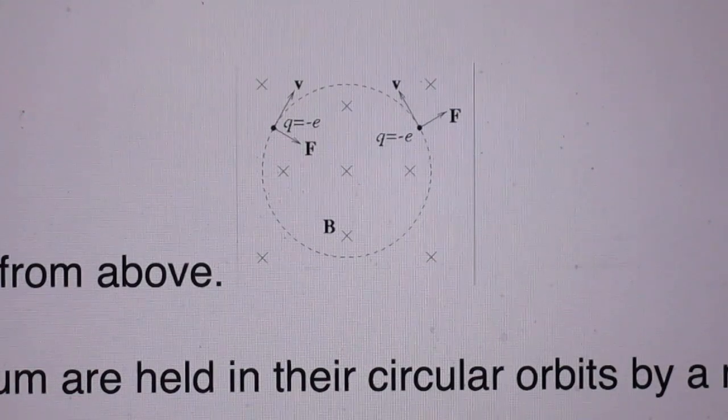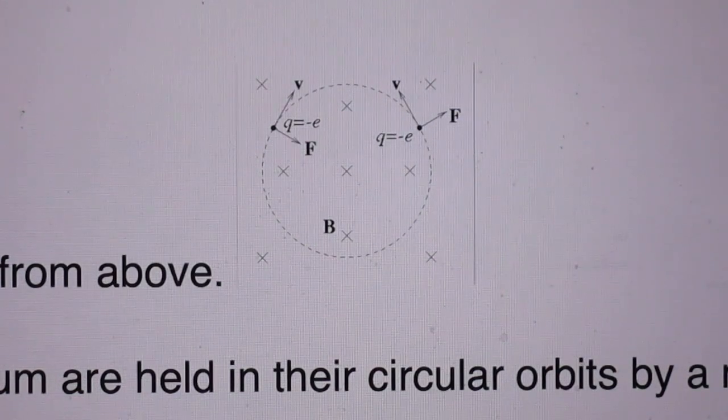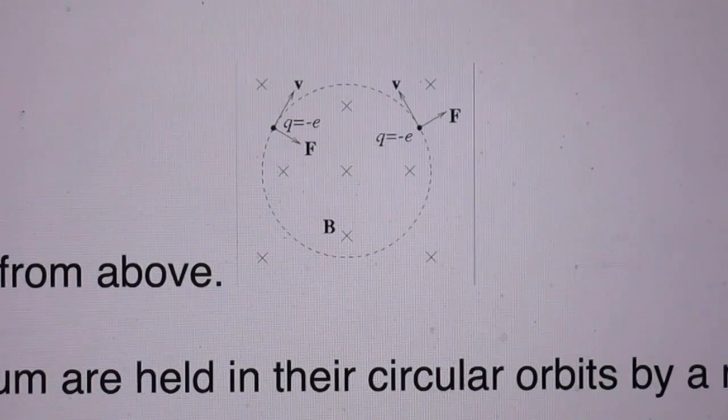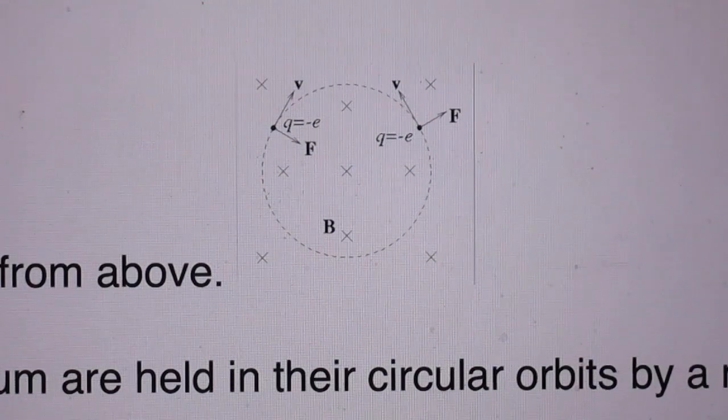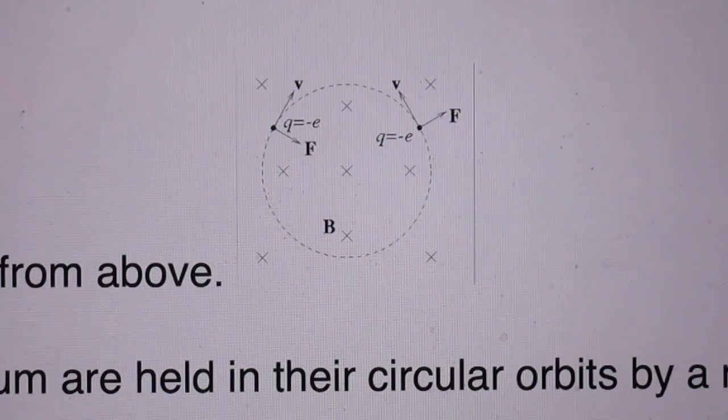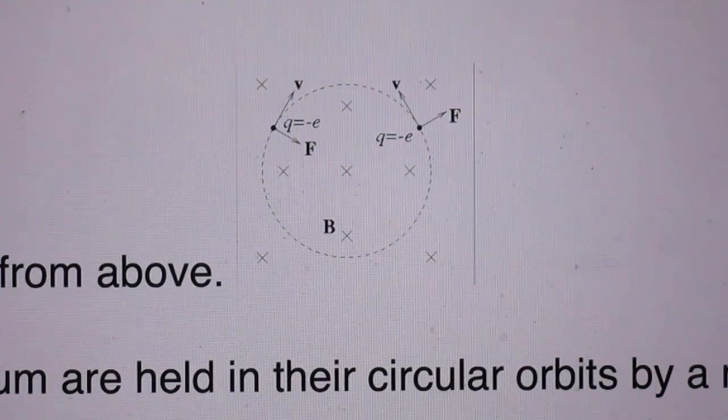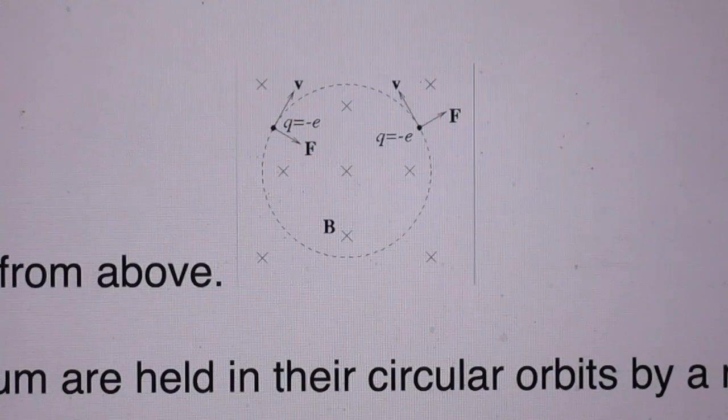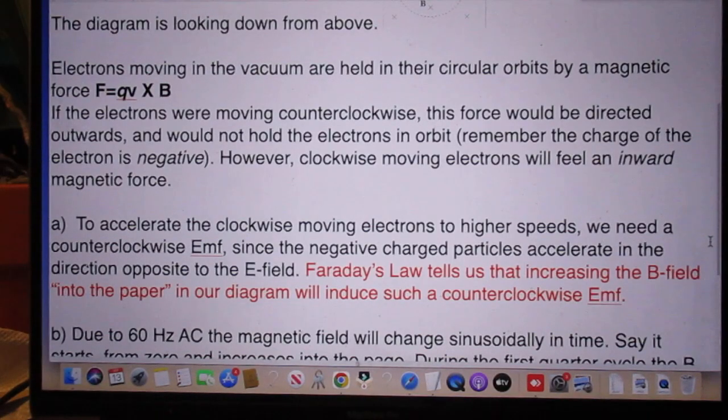You see its velocity and you see the magnetic force towards the center. And then on the right you see an electron moving in counterclockwise direction, and now you see that the force is radially outwards. The diagram is looking down from above.